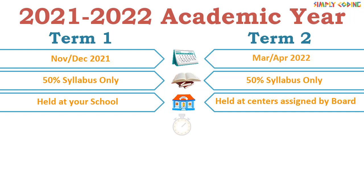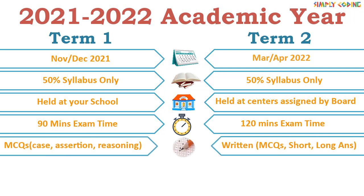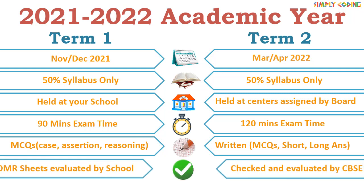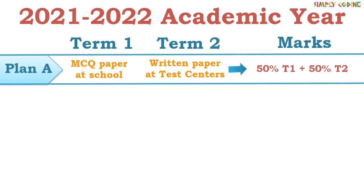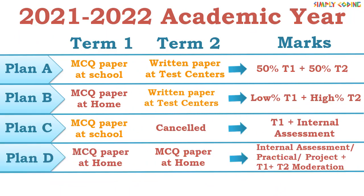Term one exam will be held in your school and the term two exam will happen at centers assigned by the board. Term one exam will be 90 minutes and will have only MCQ questions. Term two exam will be 120 minutes with a proper written paper including short and long answers. Term one can be evaluated at school, but term two will be checked by the board.